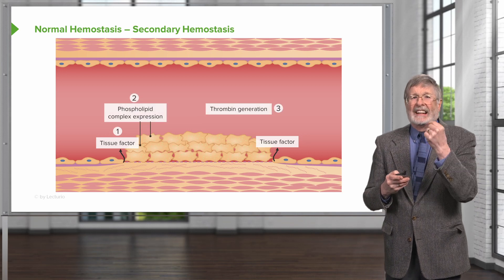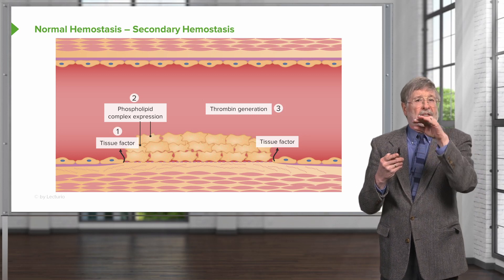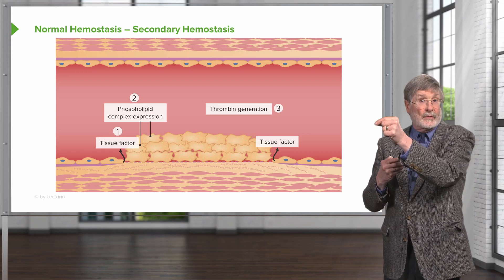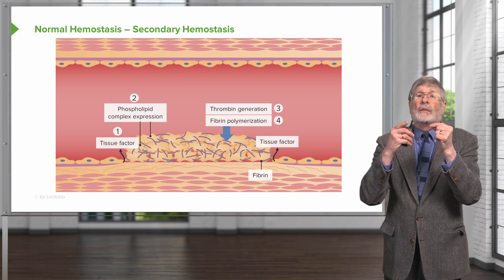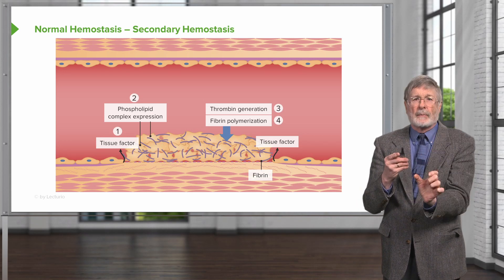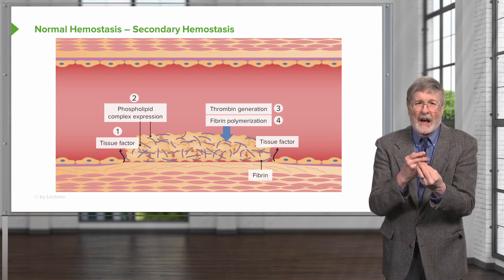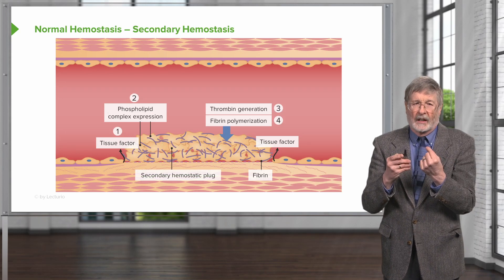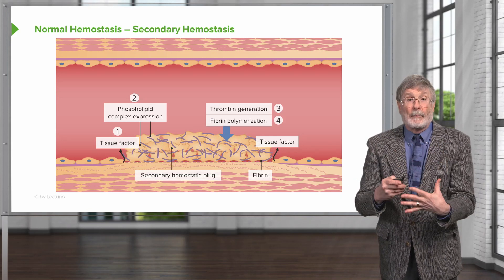Tissue factor in association with the phospholipid being expressed on the platelet surface will lead to the generation of thrombin. After thrombin generation, we get the polymerization of fibrin — fibrinogen is broken into fibrin fragments that then polymerize. This fibrin will be the mortar that cements together the platelet bricks and gives us our definitive hemostatic plug, the secondary hemostatic plug. This can completely block the lumen and will very definitively stop the bleeding.